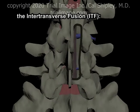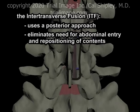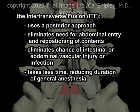The intertransverse fusion or ITF procedure has one major advantage over the ALIF or anterior lumbar interbody fusion: it uses a strictly posterior approach to access the spine. This eliminates the need to enter the abdomen and reposition the abdominal contents, as is required in the ALIF procedure. This, in turn, eliminates the possibility of complications associated with manipulation of the abdominal contents, such as intestinal or vascular injury or abdominal infection. In general, this also reduces the length of the operative procedure and the duration of general anesthesia.